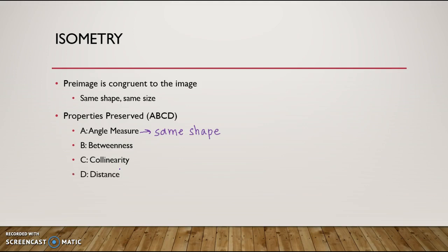And the last one, D, is distance. Distance is where we get the same size. The distance of everything you have on your shape has to be the same before and after. If your distances are the same, your shape is the same size. So the easier ones to remember are angle measure and distance—so we get our same shape and same size from. And betweenness and collinearity, they're very similar.